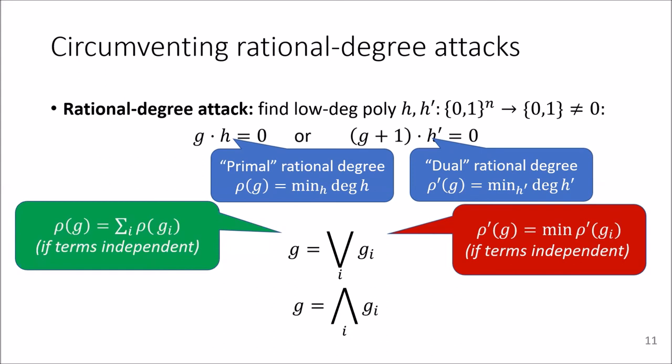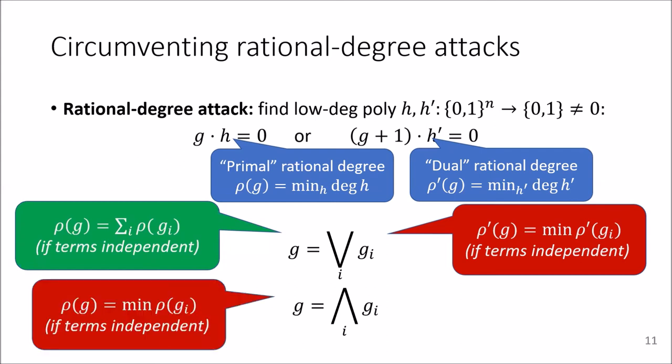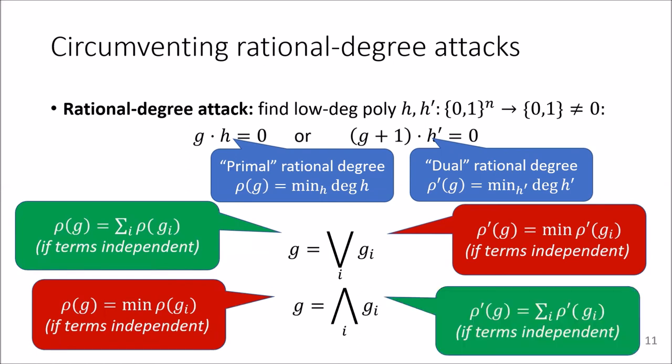But now if we look at an AND term, it's very easy to see that this just behaves dual to the OR. And so there we have that the primal rational degree is not increased, but the dual rational degree is now the sum of the dual rational degrees of all the Gi.